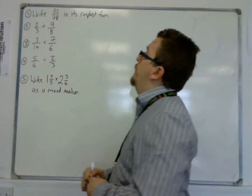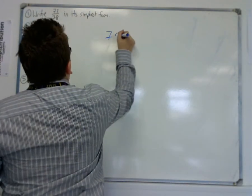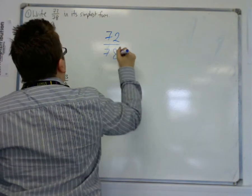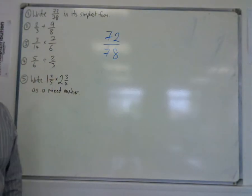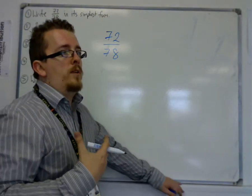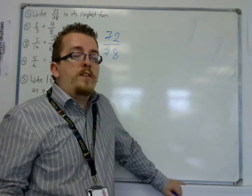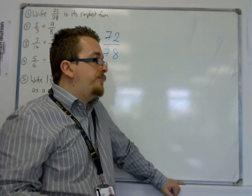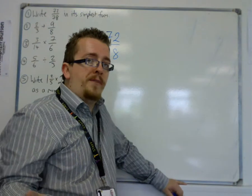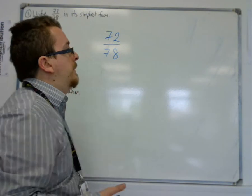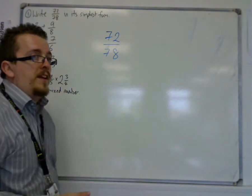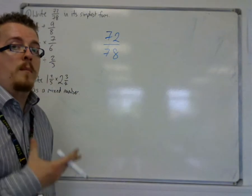So this first question writes 72 over 78 in its simplest form. So you need to cancel down a fraction. Now, it's all down to your confidence with using times tables. How good are your times tables? You might be feeling that at this stage they're not so good. Well, it's time we need to build them up.